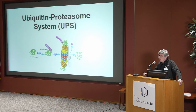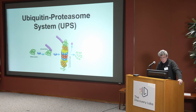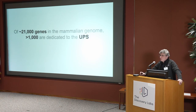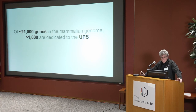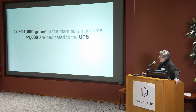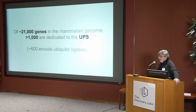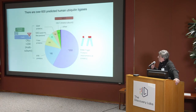The ubiquitin-proteasome system has been introduced already by Avram, so I will not go through it. Just to remind you that of 20,000 genes in the mammalian genome, about 1,000 are dedicated to the ubiquitin-proteasome system. Of these, 600 encode ubiquitin ligases, and ubiquitin ligases come in different families.